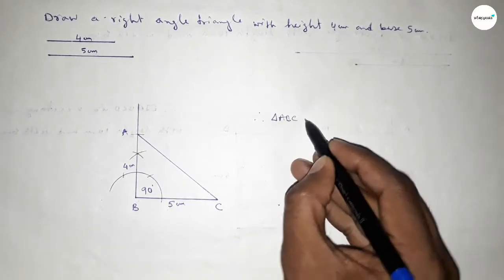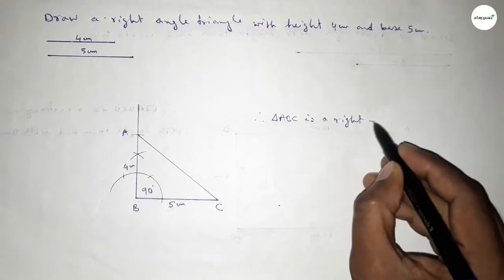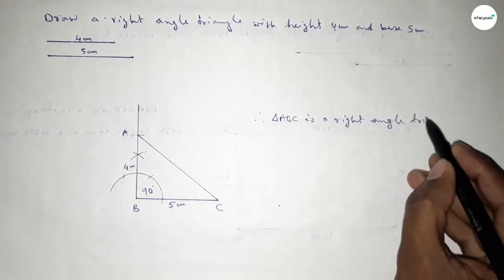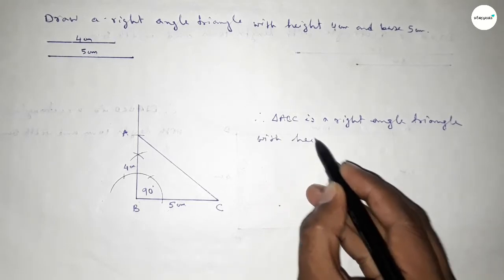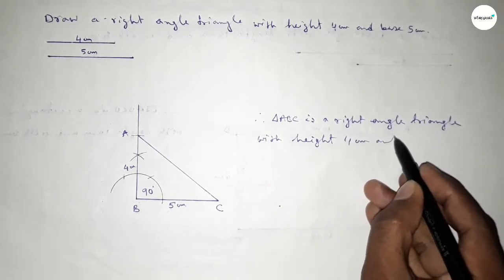Triangle ABC is a right angle triangle with height 4 centimeters and base 5 centimeters and angle B equal to 90 degrees.